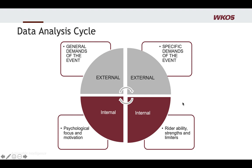As I come around the cycle, I move to the internal factors — what's going on within the athlete. Here's rider ability, strengths and limiters. All those notes I've been taking, I record them here. What are the strengths, and what could limit them? How do we win by their strengths, and what weaknesses can develop into limiters on this course in this event?